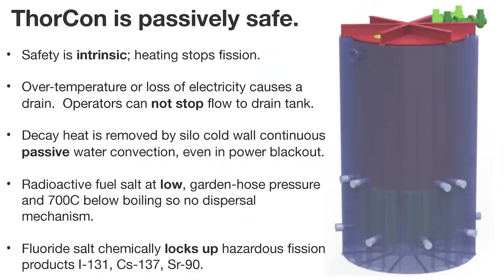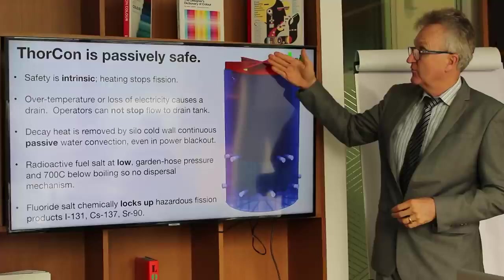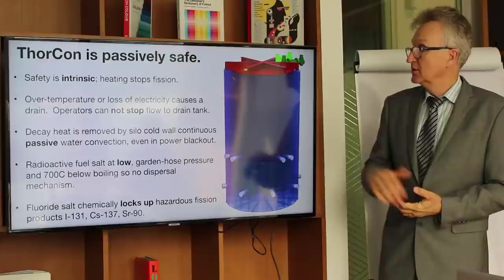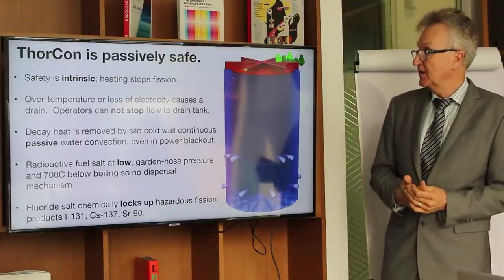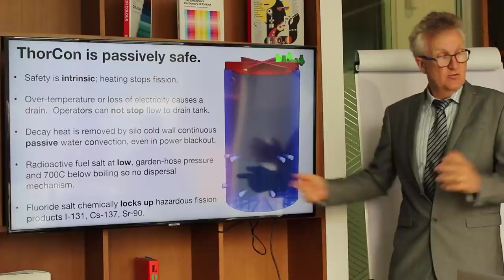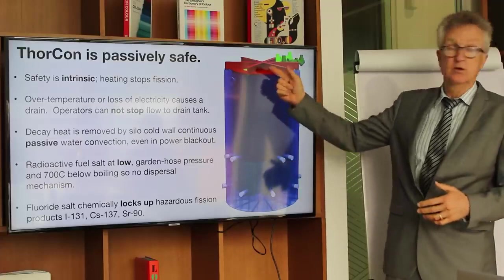Safety is intrinsic. That is, it's going to do it automatically without any electricity, people or machinery. First one is to stop the fission. We talked about shutdown rods dropping automatically, backed up by salt heating up, losing its reactivity as it gets warmer. So that stops the fission. That's job one. Job two is to remove the decay heat by having the fuel salt drain into the drain tanks and then radiate their heat into this wall and then into the decay heat removal pond. And the third job is to be sure that we keep all the fission products contained.